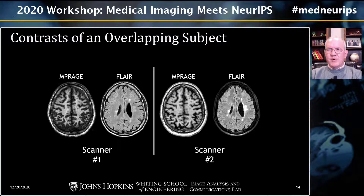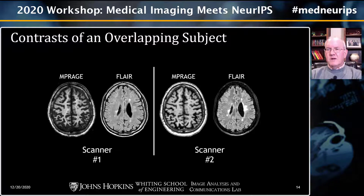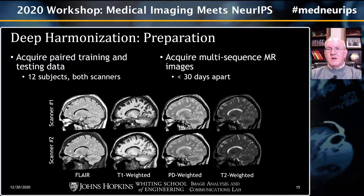Here's an example of the kind of problem we're addressing. From scanner one, I'm showing two representative images: MPRAGE, which is T1-weighted, and FLAIR, which is fluid attenuated inversion recovery and often used for highlighting lesions present in this individual's white matter. In scanner two, it's the same individual, and you can see that things look different — the tissue contrast is subtly different. We have four image acquisition types available: FLAIR, T1-weighted, PD-weighted, and T2-weighted on both scanners, with 12 subjects scanned within 30 days of each other on both scanners.